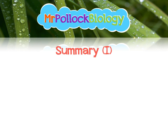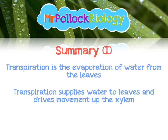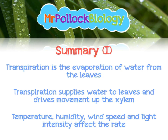Let's summarize this whole video. Transpiration is the evaporation of water from the leaves. Transpiration supplies water to the leaves and drives movement through the xylem. We've got four factors affecting the rate of transpiration: temperature, humidity, wind speed, and light intensity.